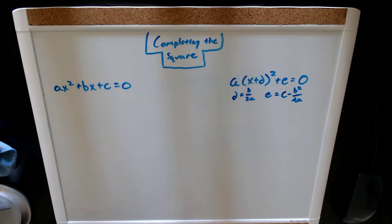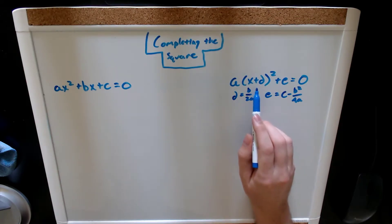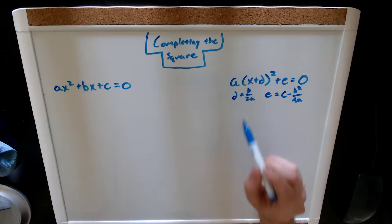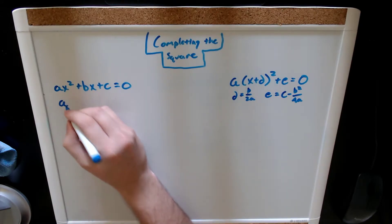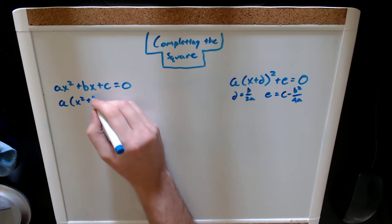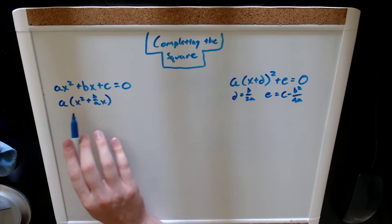The first thing that we're going to want to do is extract a from these first two terms. The reason being, if you look over here, this x plus d doesn't have a coefficient in front of the x. So, if we extract the a from the first two terms, we get a times the quantity x squared plus b over a x.